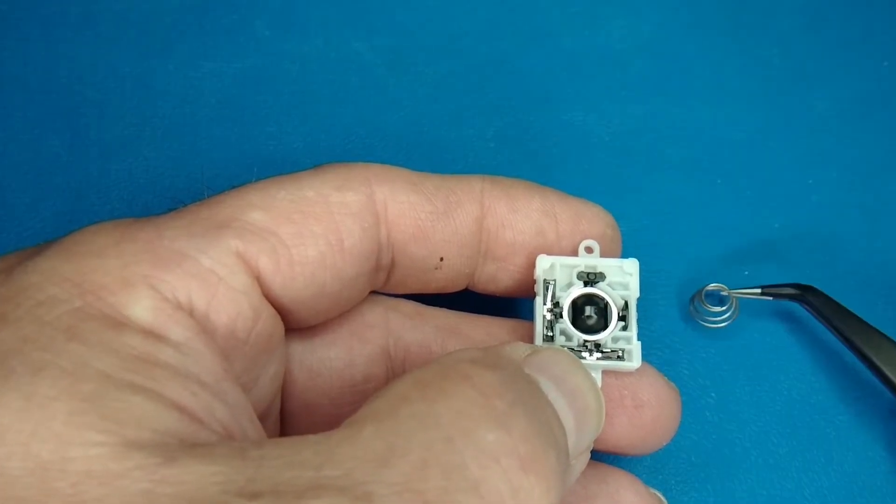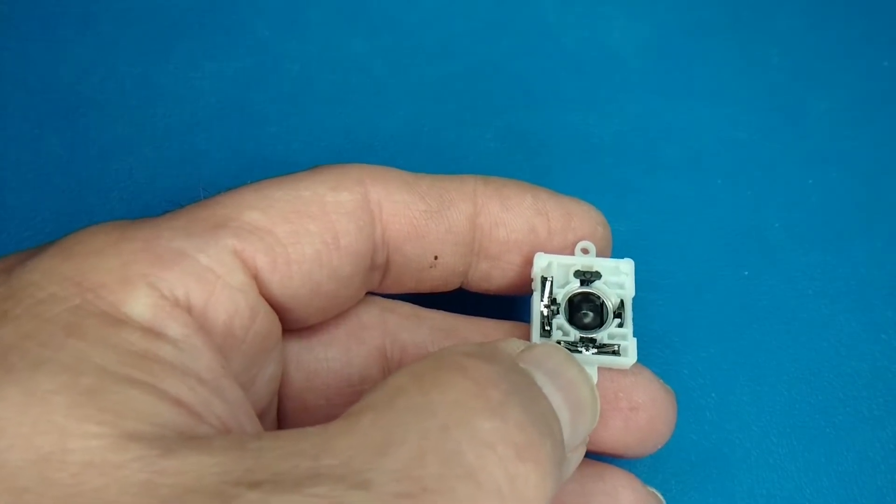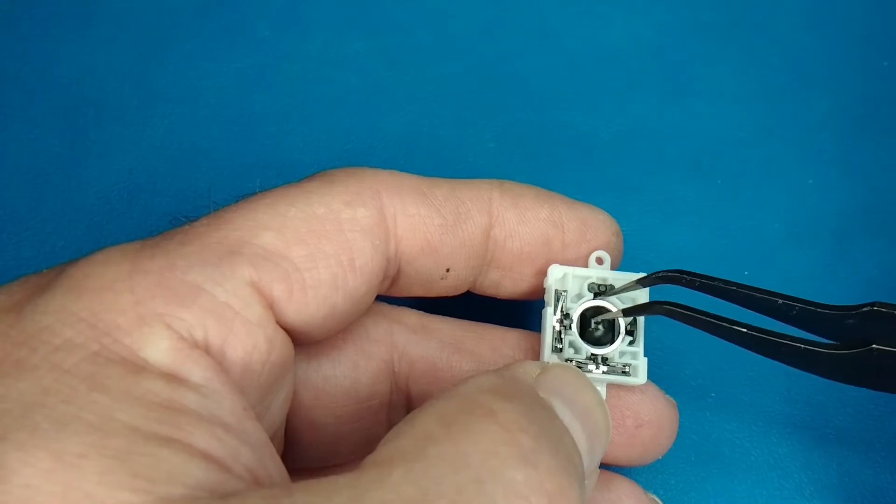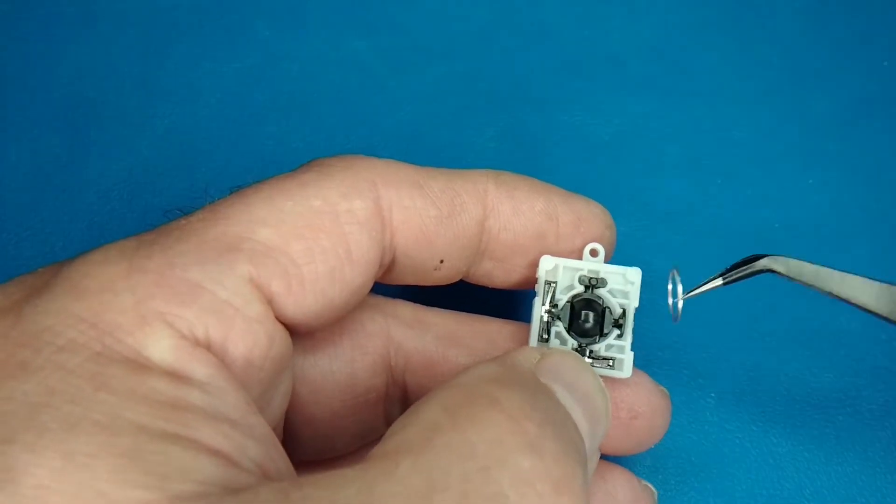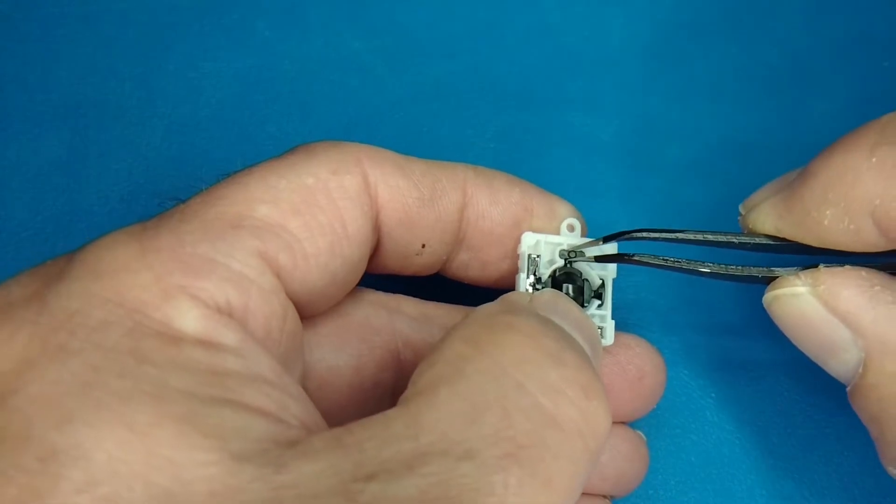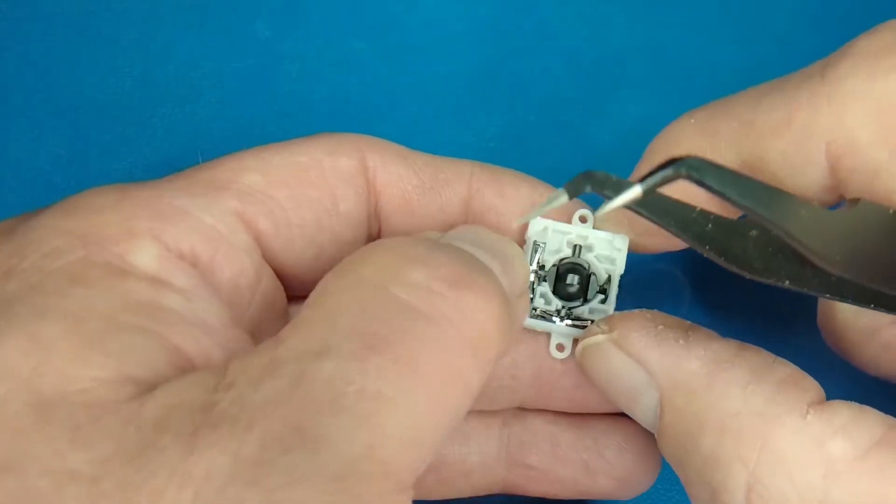So we're going to remove the spring. And then there's a little washer that's going to come off. We've got to pull that. I'm going to pull out that little plastic piece right there. That's actually the button actuator.